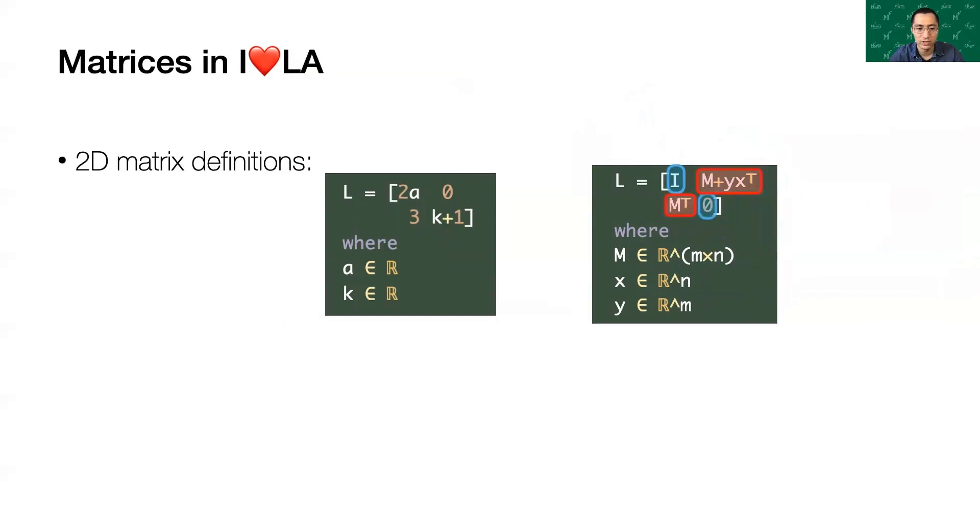While the right example is a block matrix, it has matrices with known dimensions in the counter diagonal, and it has identity matrix and a zero in the diagonal. Zero here will be lifted to a zero matrix. The dimensions of the identity matrix and the zero matrix can both be inferred, which together defines the L matrix with known dimensions.